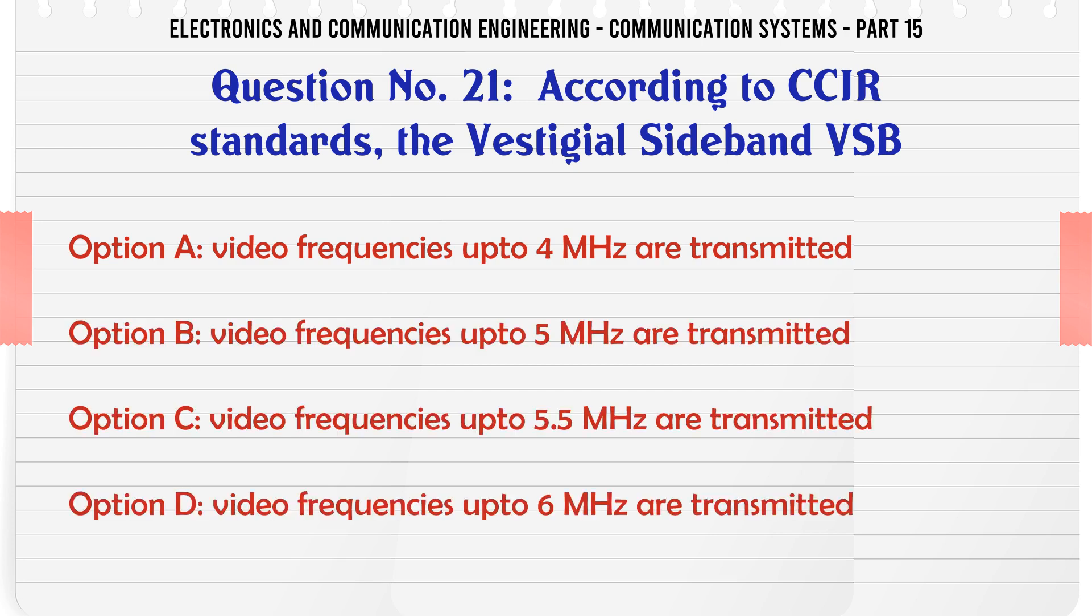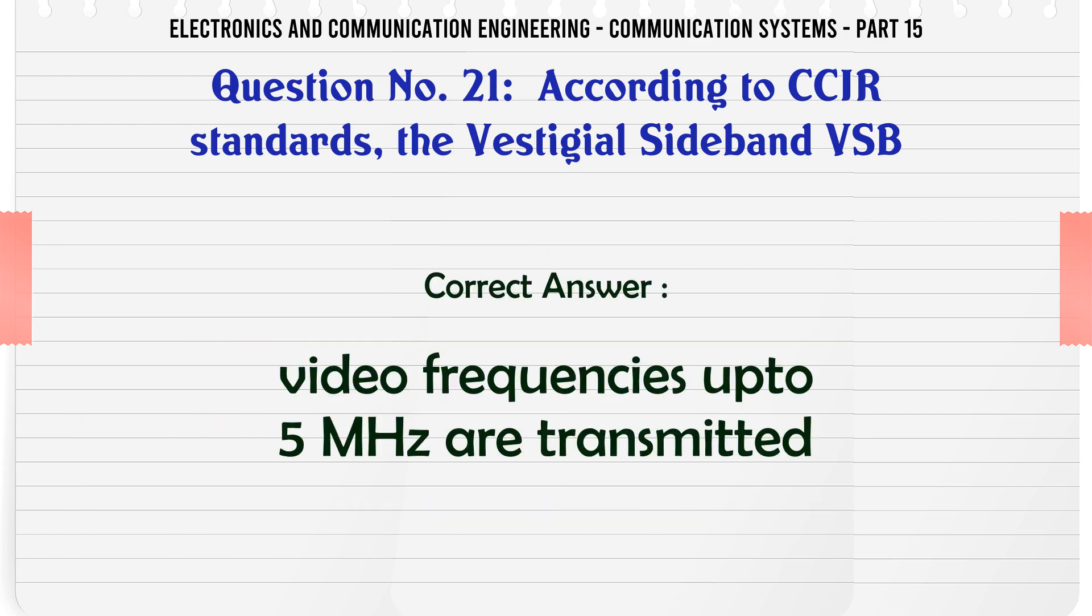According to CCR standards the vestigial sideband USB: A video frequencies up to 4 MHz are transmitted, B video frequencies up to 5 MHz are transmitted, C video frequencies up to 5.5 MHz are transmitted, D video frequencies up to 6 MHz are transmitted. The correct answer is video frequencies up to 5 MHz are transmitted.